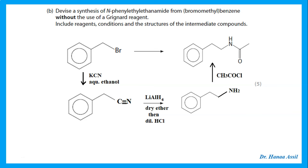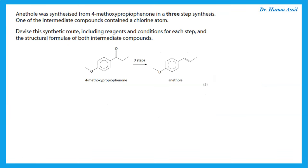Think carefully about what you're trying to make and what needs to be added to the original reagent. Next: anethole was synthesised from 4-methoxypropiophenone in three steps.